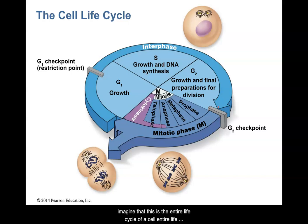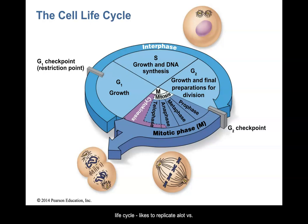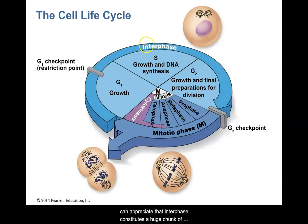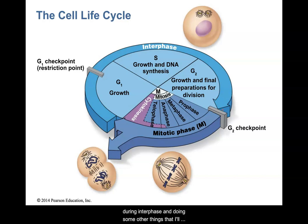Let's imagine that this is the entire life cycle of a cell — the entire life that that cell experiences. Let's say every 24 hours, though it depends on the type of cell. A skin cell is going to have a much shorter life cycle and likes to replicate a lot, versus a neuron which is not going to replicate much. But let's say every 24 hours — interphase constitutes a huge chunk of that time. Cells are usually in interphase for quite a long time, just being a cell. Mitosis does take a big chunk of their life cycle, but not as much as interphase.